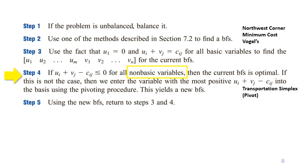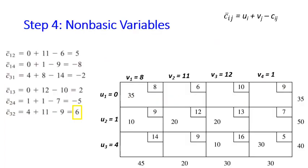Now in step four, look at all the non-basic variables. For all non-basic variables, check whether any of them, the cij hat, is positive for the minimization case. If yes, our BFS is not optimal yet. Pick one that is the most positive as the entering variable. In this case, x32 or this cell will become our entering variable.